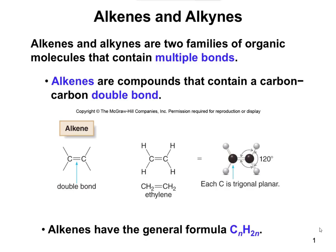Chapter 11 talks about alkenes and alkynes, which are also hydrocarbons, just like the alkanes we talked about in Chapter 10, except these ones contain multiple bonds. Alkenes are going to have a double bond, and alkynes are going to have a triple bond.